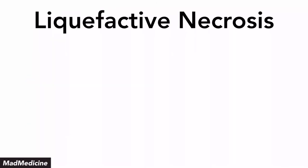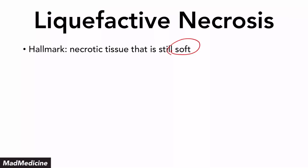The next type of necrosis is liquefactive necrosis. I like to think of liquefactive necrosis as the complete opposite, as far as gross appearance is concerned, of coagulative necrosis. The hallmark is that the tissue is going to be soft. In coagulative necrosis you had hard tissue; in liquefactive necrosis you're going to have soft tissue. Usually this occurs in soft organs. The hallmark tissue for liquefactive necrosis is the brain — very important, high-yield. The brain goes through liquefactive necrosis.